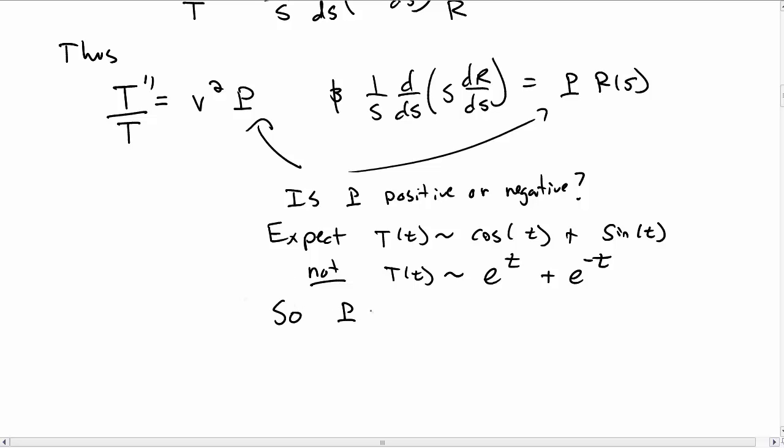That tells us that p, the constant here, has to be a negative constant. So let's write it as minus k squared so that it's definitely negative.